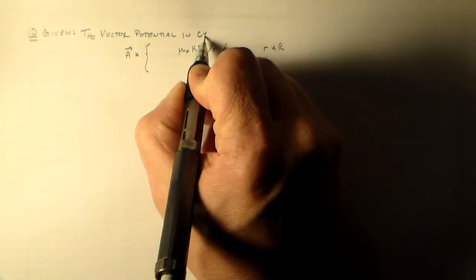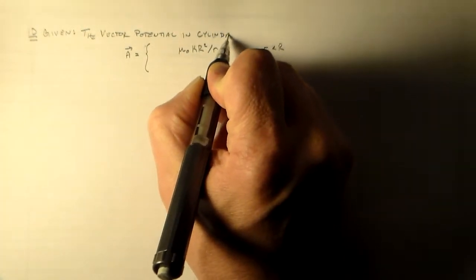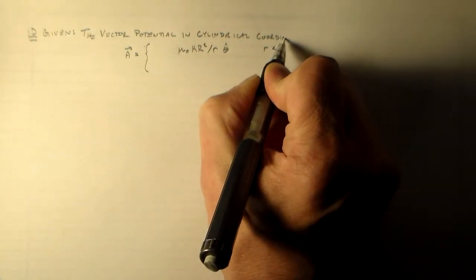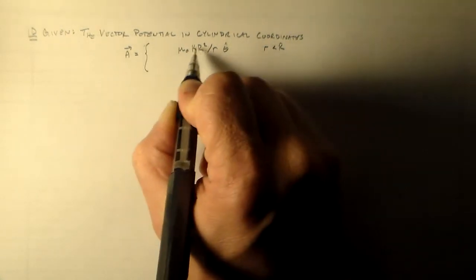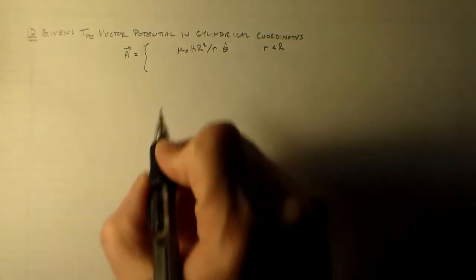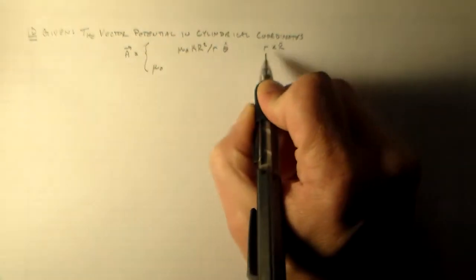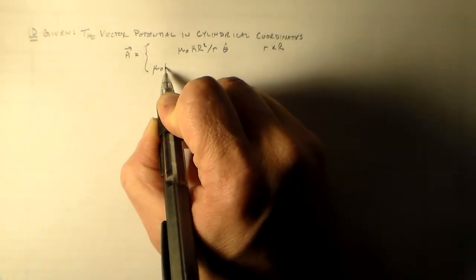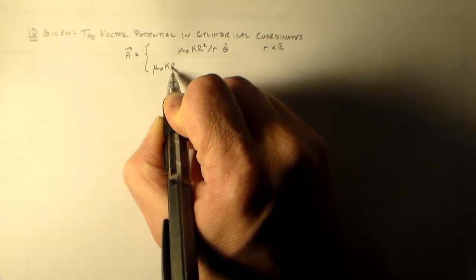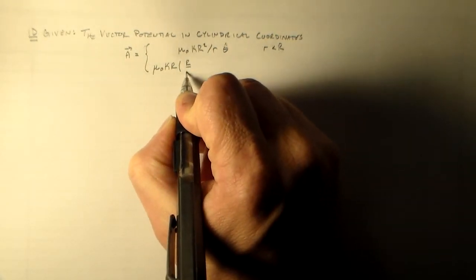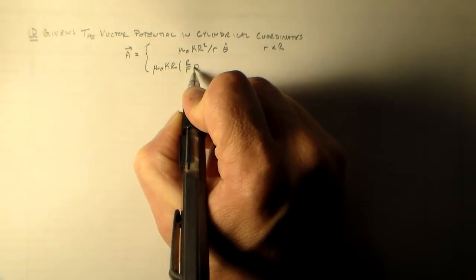So this is in cylindrical coordinates. I'm going to have it be in some region where R is less than big R, this 1 over R sort of function. But on the outside of a cylinder, what I want it to be is mu naught k R times big R over R in the theta hat direction.